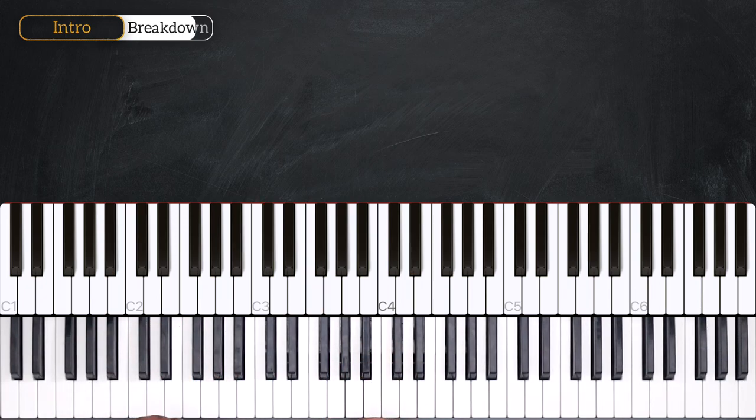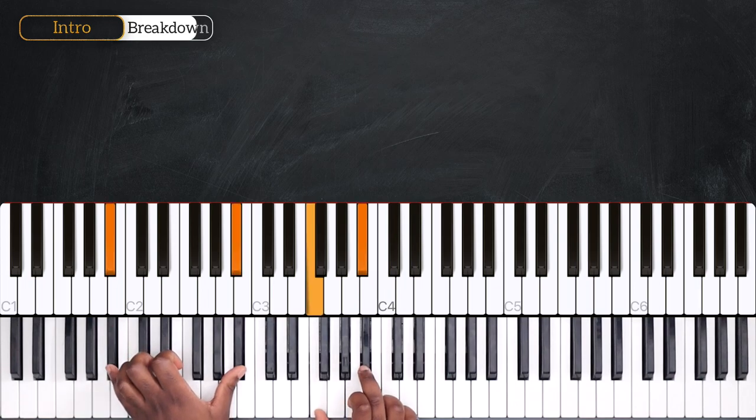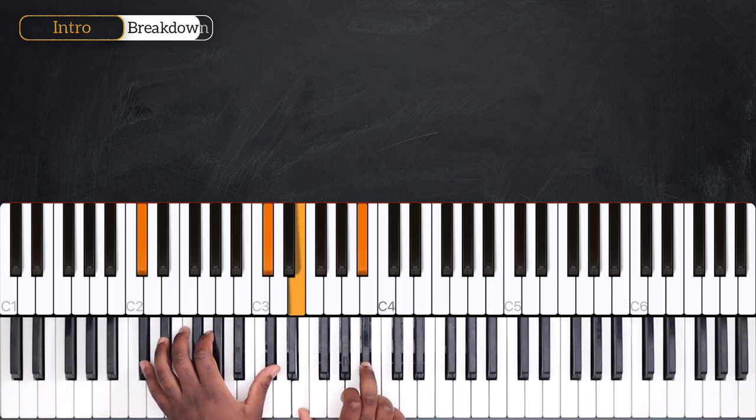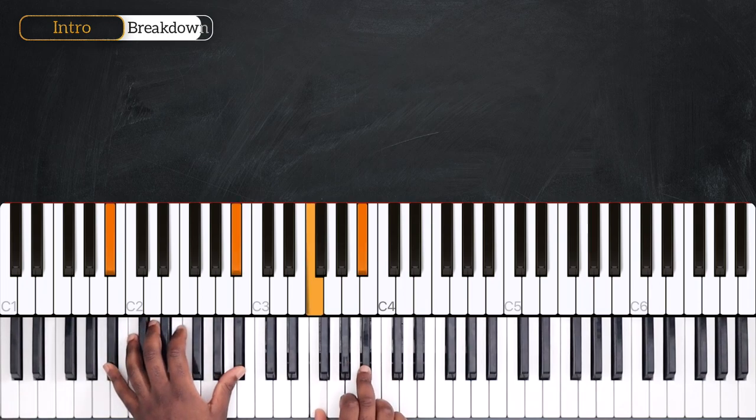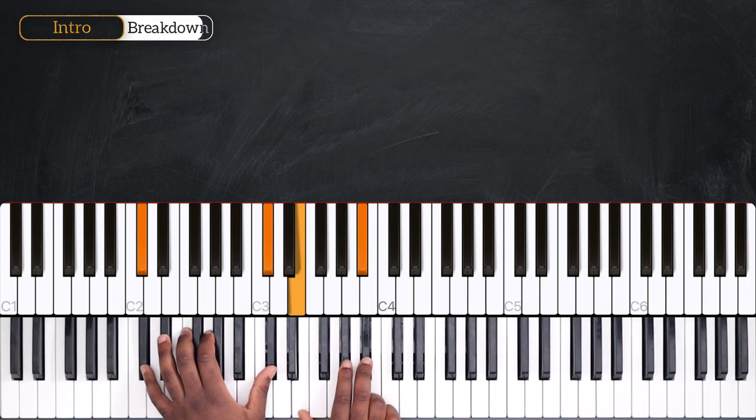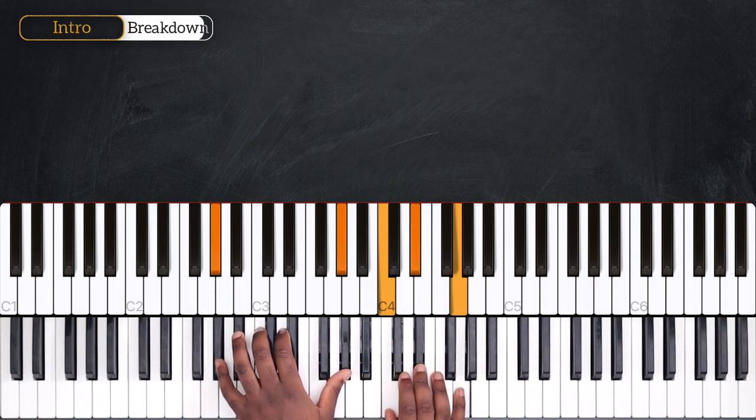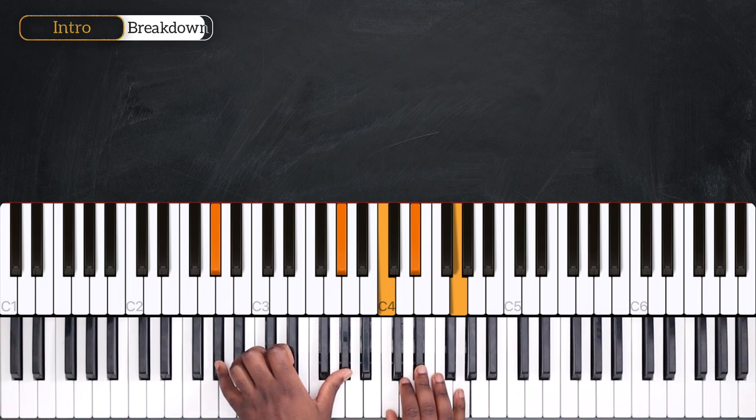Okay, now to end the pattern, I'm going to play Bb minor on the first beat. Then 1C on the fourth beat. And then play Db minor 6. 1, 2, 3, 4. 1, 2, 3, 4. And just after that, we're starting the verse.